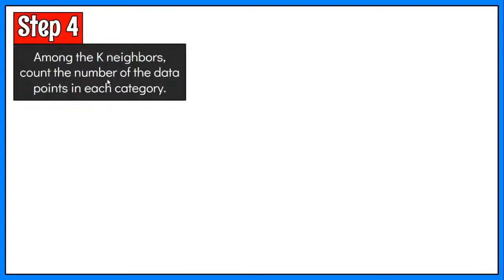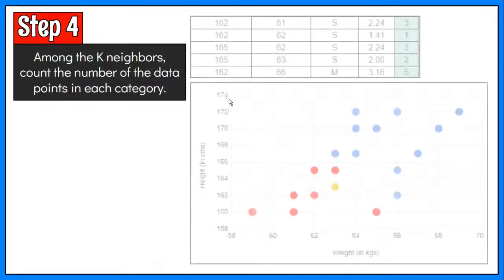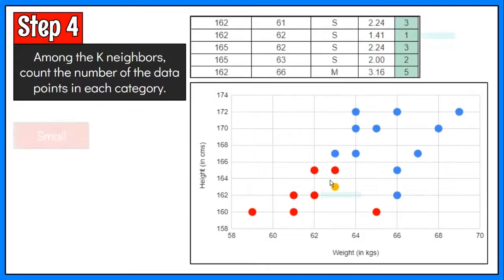Step 4: After ranking the distances, these observations are found to be the closest to the new case. Among these K neighbors, count the number of the data points in each category.